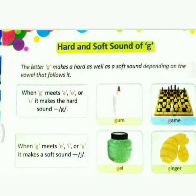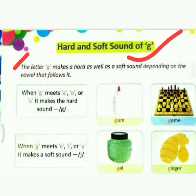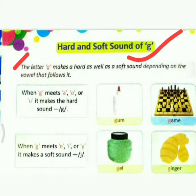Open your page number 20. The topic is hard and soft sound of G. The letter G makes a hard as well as soft sound depending on the vowel that follows it. The letter G has two sounds: one is the soft sound as J, and the other one is hard as G.